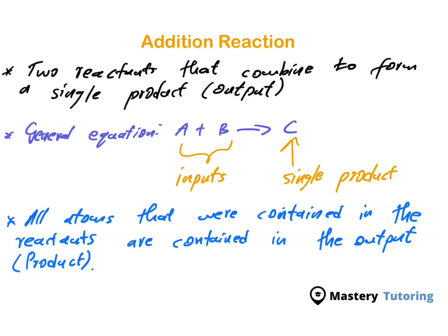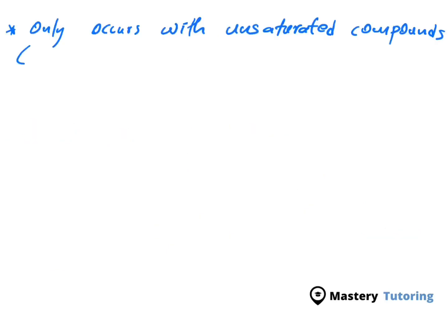Addition reaction is a type of reaction that only occurs with unsaturated compounds. We know that unsaturated compounds include alkenes and alkynes. You'll never have an addition reaction with alkanes or saturated compounds. It always occurs with unsaturated compounds.